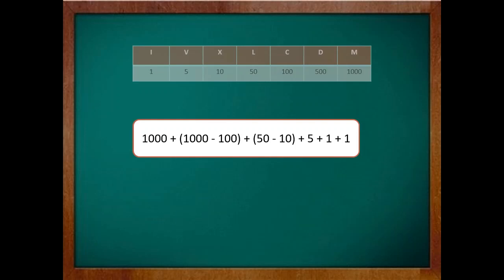So 1947 can be written as 1000 plus 1000 minus 100 plus 50 minus 10 plus 5 plus 1 plus 1. Now 1000 minus 100 can be written as CM and 50 minus 10 can be written as XL. So finally 1947 becomes MCMXLVII.